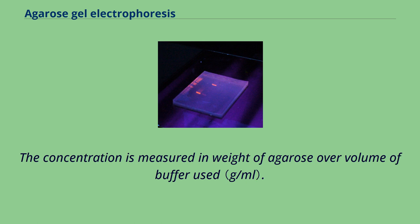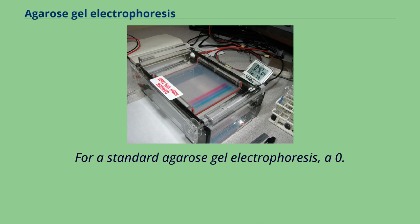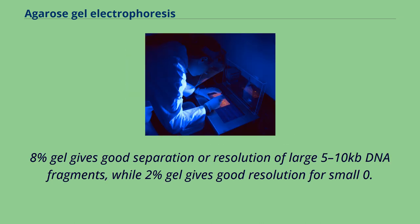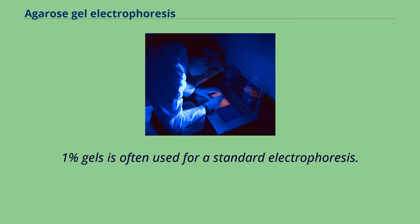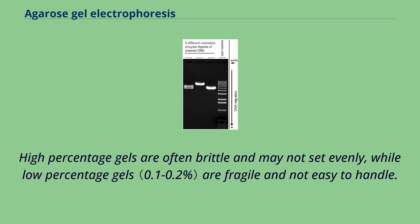For standard agarose gel electrophoresis, a 0.8% gel gives good separation of large 5–10 kilobase DNA fragments, while a 2% gel gives good resolution for small 0.2–1 kilobase fragments. One percent gels are often used for standard electrophoresis. High percentage gels are often brittle and may not set evenly, while low percentage gels are fragile and not easy to handle. Low melting point agarose gels are also more fragile than normal agarose gel.